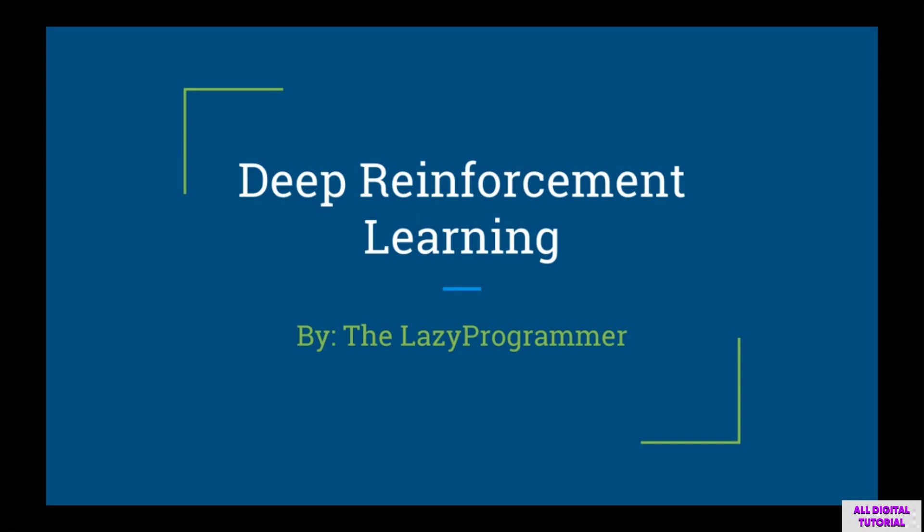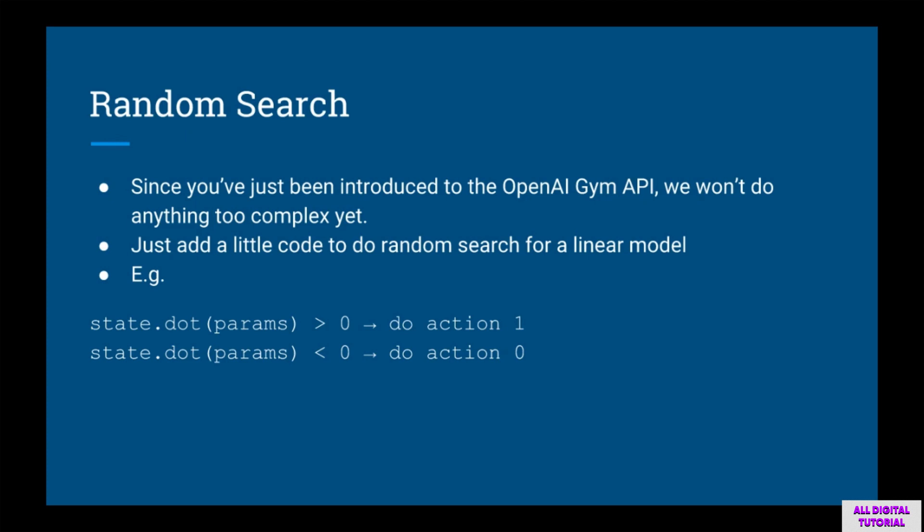Welcome back to Deep Reinforcement Learning, Deep Learning in Python Part 7. Since you've been introduced to the OpenAI Gym interface, we're going to add just a little bit of code to do a random search in the parameter space for a linear model. We are going to take our state s, dot it with a vector of weights w, and if this is greater than zero we'll do one action, and if it's less than zero we'll do the other action.